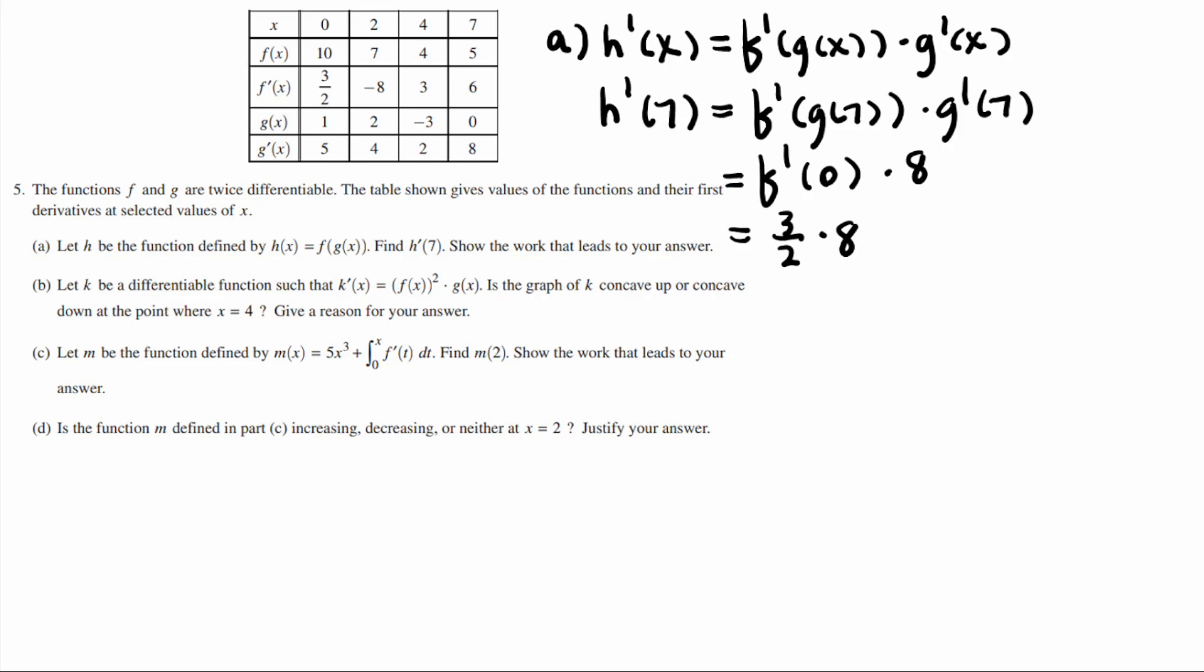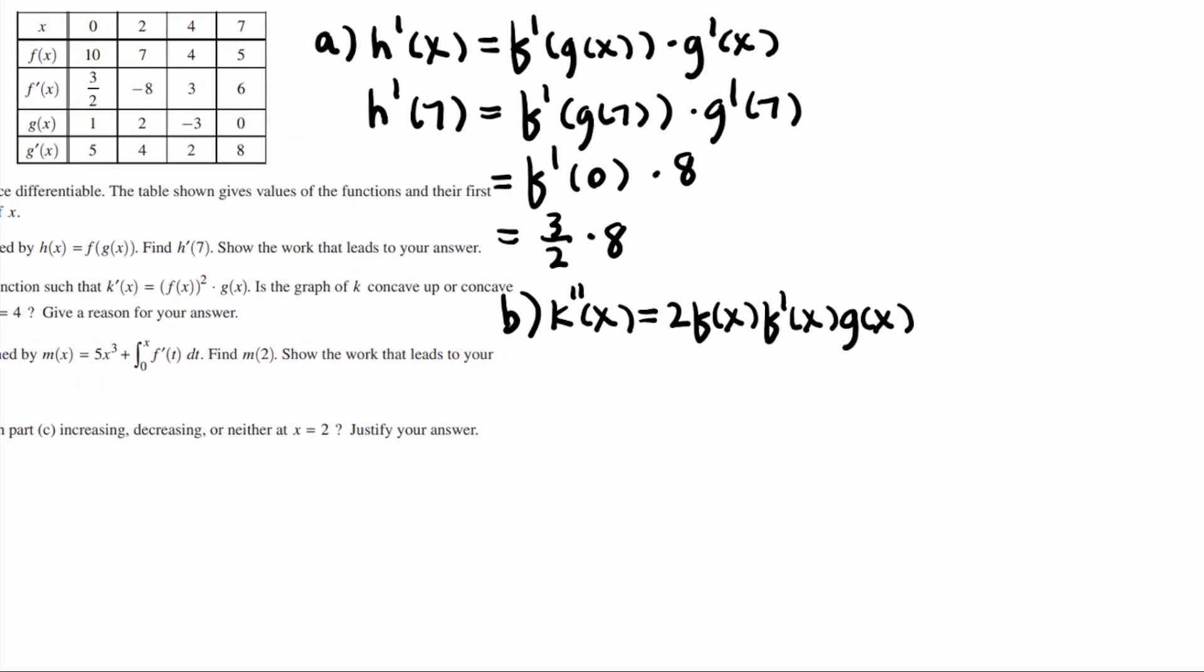All right, so k is a differentiable function. So k prime is given by f of x squared times g of x. The graph of k concave up or concave down at the point where x equals 4. So we're going to have to check the sign of k double prime. It would be k double prime. I'm wondering if I'm going to have enough room to do this. All right, so the derivative of 2 f of x would be 2 times f of x times f prime of x. We're doing the product rule, so we're going to leave g of x the same. And then we're going to add in, leaving f of x squared the same, taking the derivative of g. So that would be g prime of x. So I'm going to get one still visible to you.